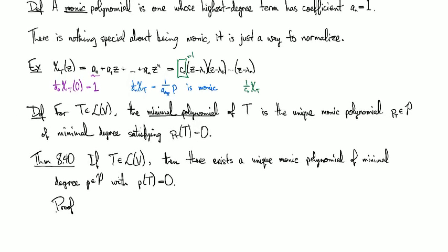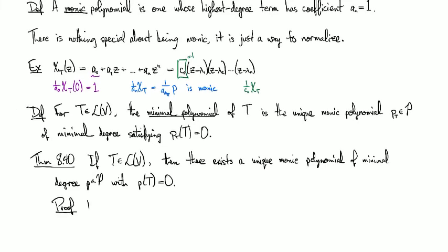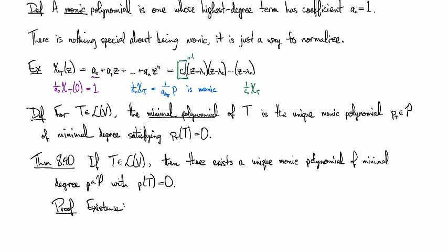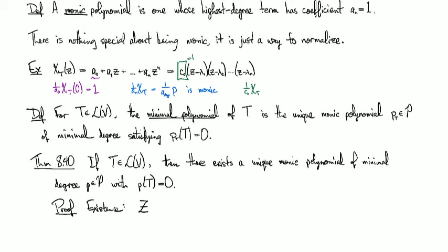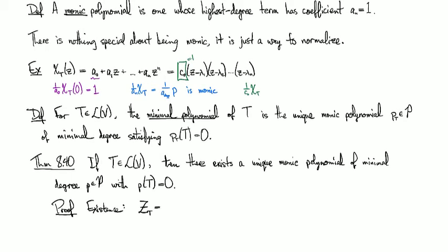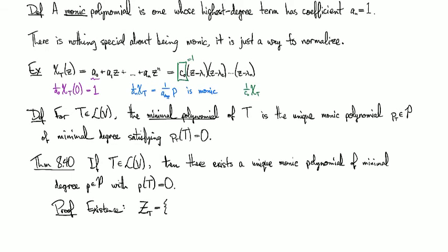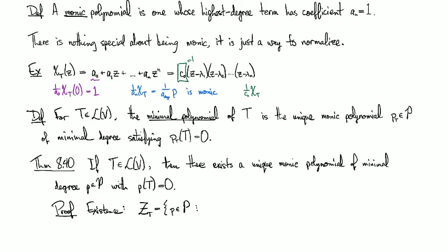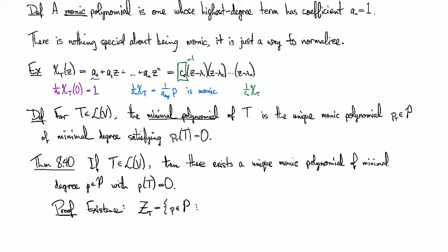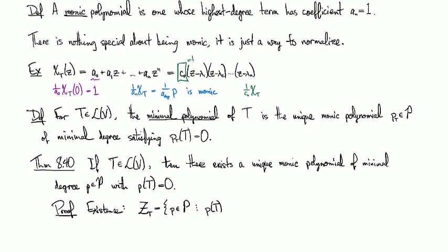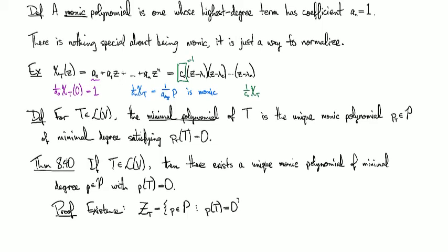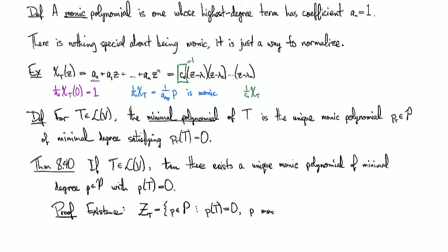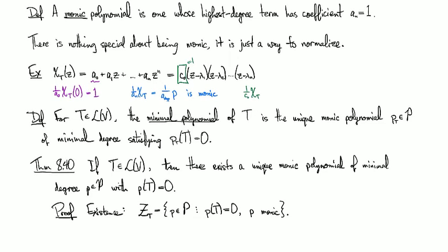Okay. And so for the proof of this guy, let's see, so for the existence part, let's take Z_T to be the collection of all polynomials such that P of T is equal to 0, and which are monic.